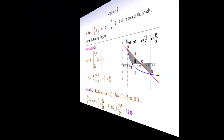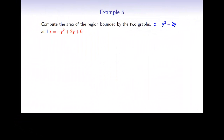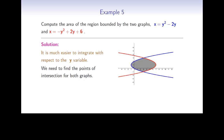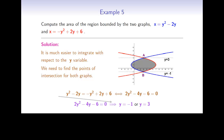Now here's our last example. Compute the area of the region bounded by the two graphs, x equals y squared minus 2y, and x equals negative y squared plus 2y plus 6. The graphs are parabolas, and since the equations are given in the form x equals something in terms of y, it is easier to use integration with respect to the y variable. First, we find the points of intersection by setting y squared minus 2y equal to negative y squared plus 2y plus 6, which gives the quadratic 2y squared minus 4y minus 6 equals 0, with solutions y equals negative 1 and y equals 3 — the bounds of integration.